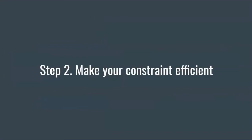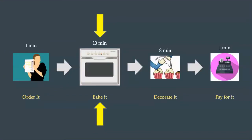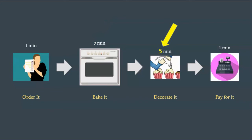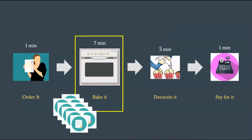Now that we've identified the constraint, what's the next step? Step number two: make your constraint efficient. The next step is to make the cake baking process more efficient by improving the constraint as much as you can. So let's say you increased the efficiency in the baking stage so that it is now 7 minutes per cake. How fast can the bakery produce cakes now? It's 8 minutes per cake, because the decorating phase still makes one cake every 8 minutes. To improve the efficiency of the system, you need to also improve the efficiency of the decorating step. So let's improve it — say it is now 5 minutes per cake, because you found a new way to decorate cakes. Even so, the bottleneck is still in the baking step, and we know that the bakery cannot produce more than one cake every 7 minutes.